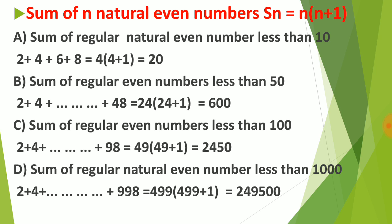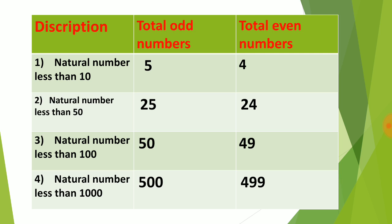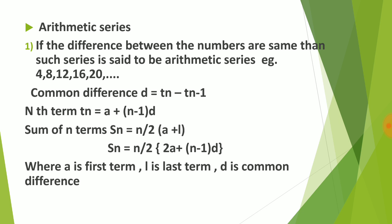Looking at the table: for natural numbers less than 10, there are 5 odd numbers and 4 even numbers. For numbers less than 100, there are 50 odd numbers and 49 even numbers. But for 'up to 100', there are 50 odd numbers and 50 even numbers — so always be careful about 'less than' or 'up to'.